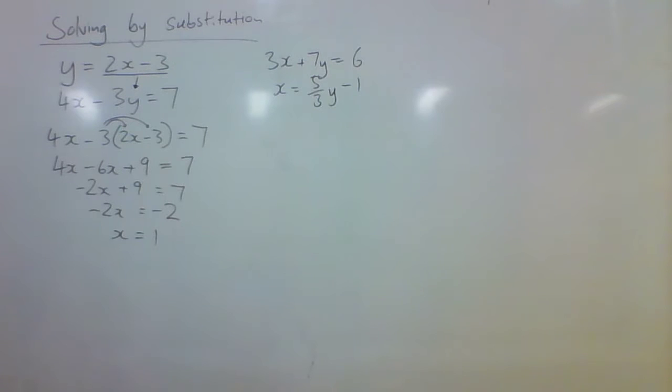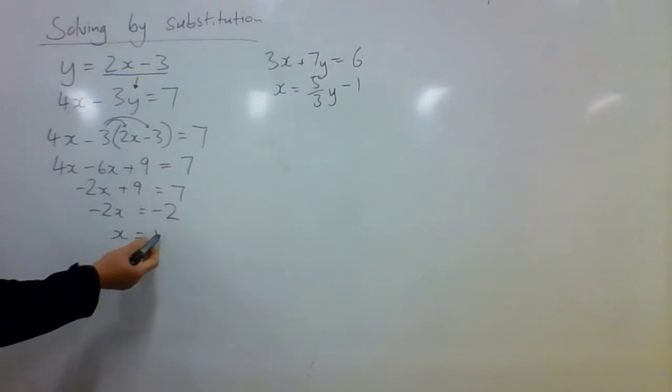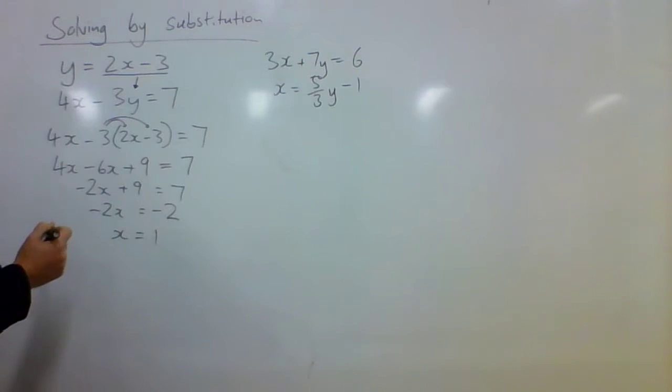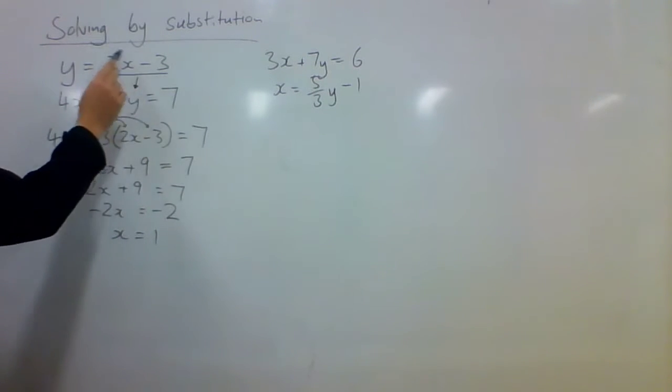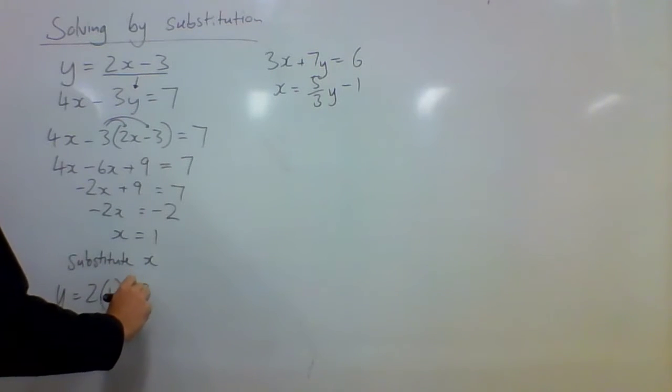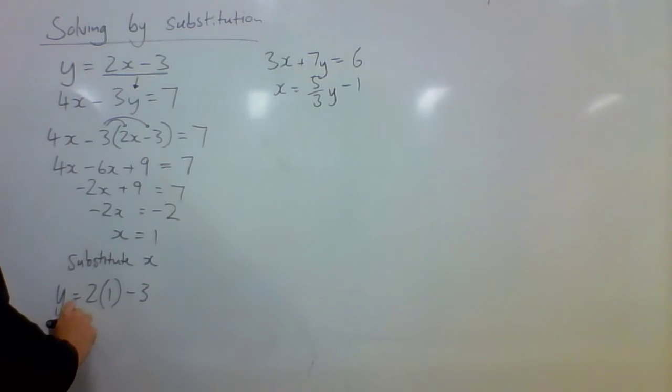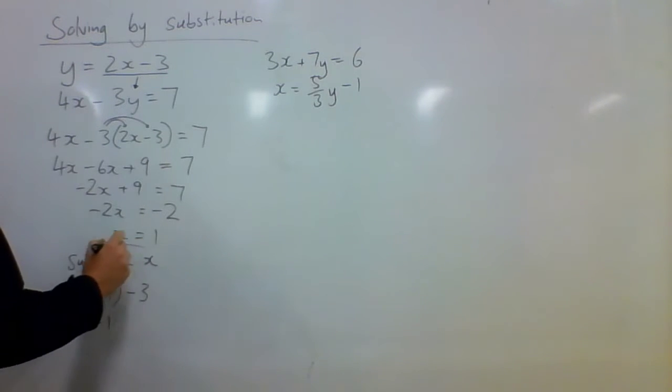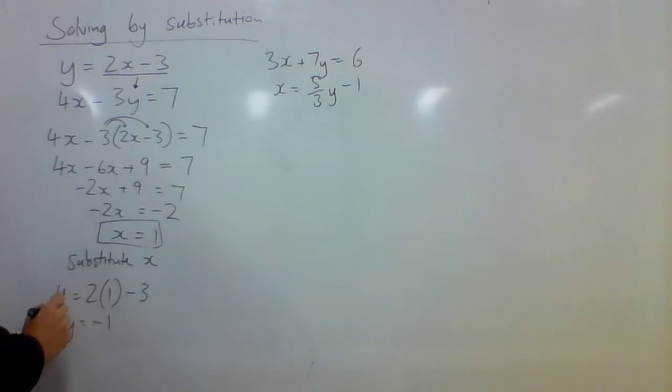So that's half the problem. The other thing is I need to find out what y is. So I substitute that x back into one of these equations. It makes the most sense to put it into this one here because I've got y by itself. So I'm going to substitute x. y equals 2 times 1 take 3. So y will equal negative 1. x equals 1, y equals negative 1 is the solution.